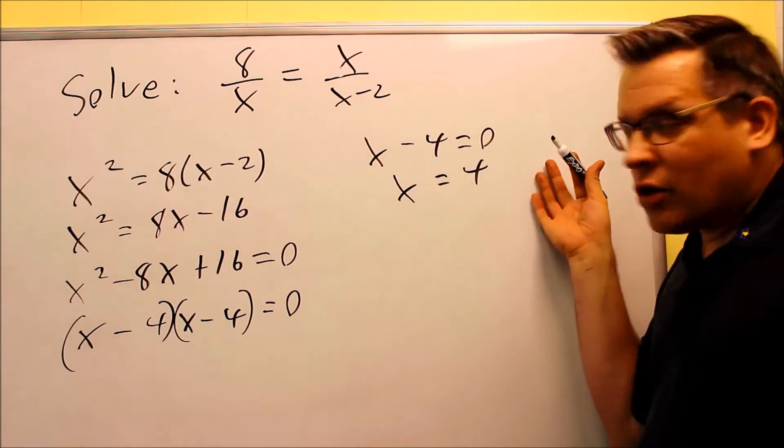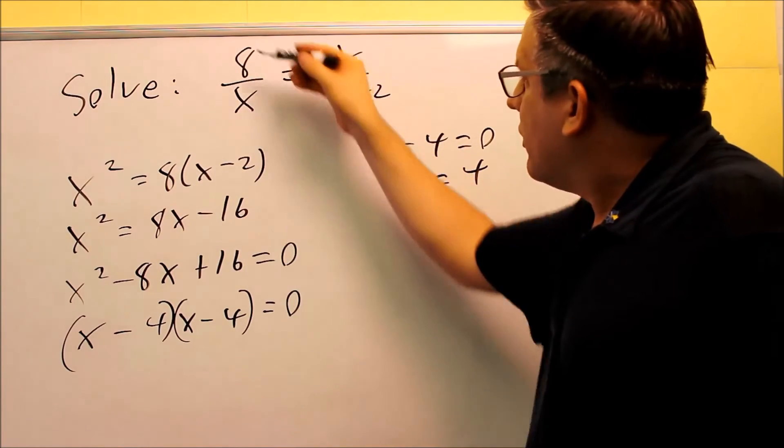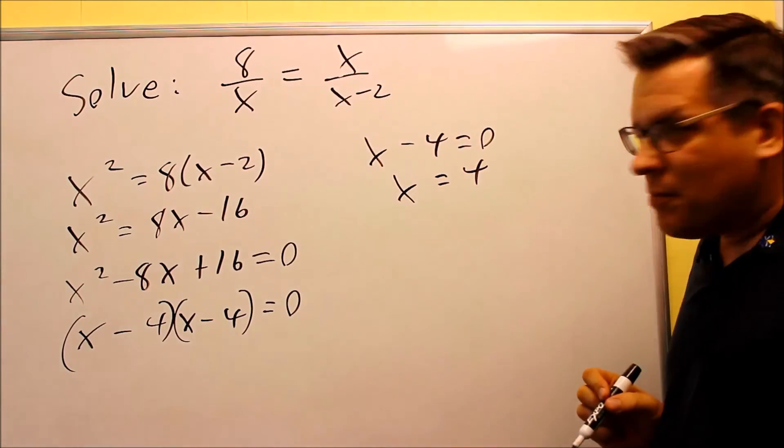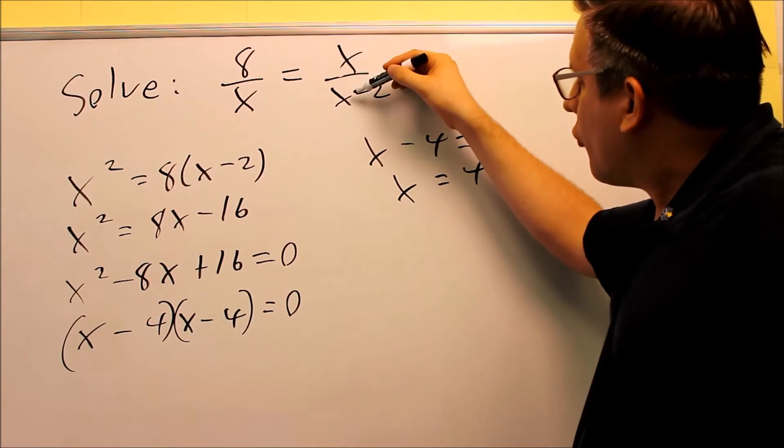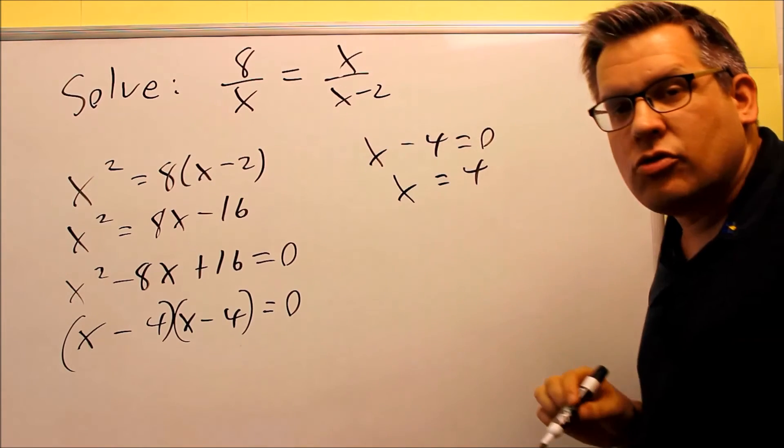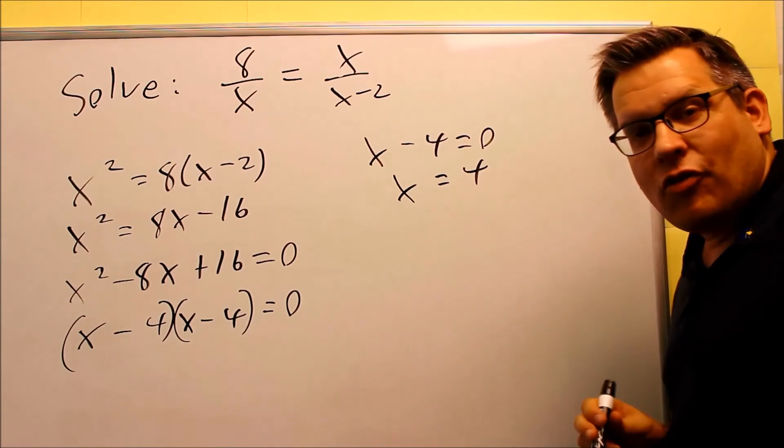You can always check your answer to see if it did it correct. If you put a 4 in here, 8 over 4 would be 2. If you put 4 in here, 4 over 4 minus 2, you'll also get 2 on that side, so therefore we know 4 is our answer.